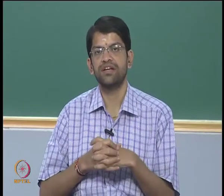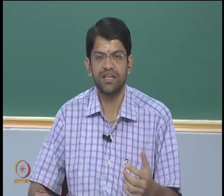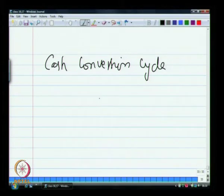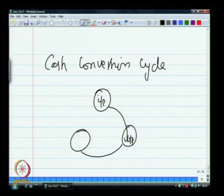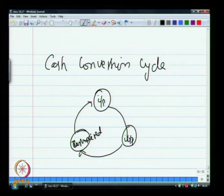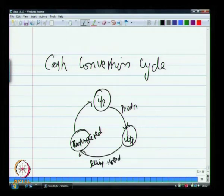To understand the cash conversion cycle, let us begin by understanding a normal business cycle. Any business entity, whether engaged in selling goods or providing services, will have three elements: an input that gets converted into an output that gets sold, for which cash is received, and then again we buy inputs — this process keeps repeating. The input to output is your production; the output to cash received is your selling plus collection; and this will be your purchasing.